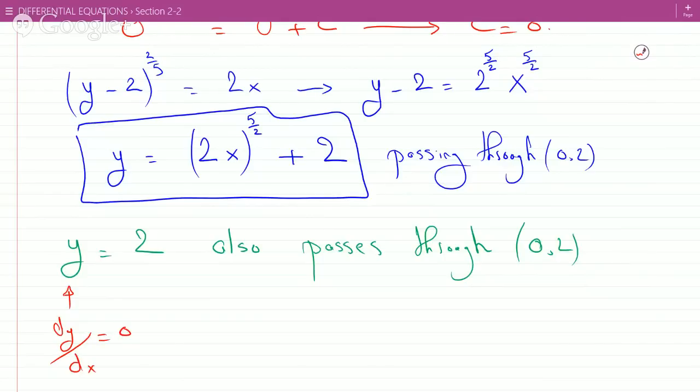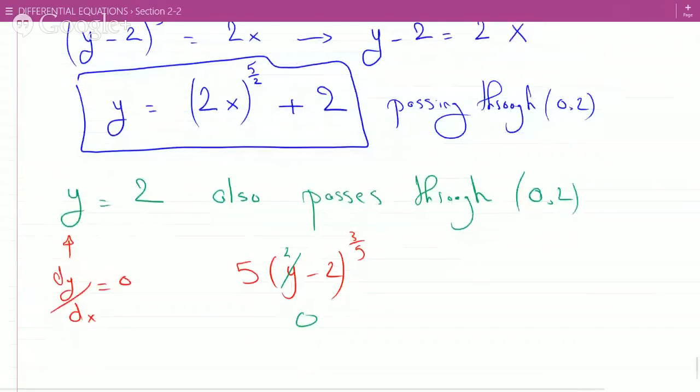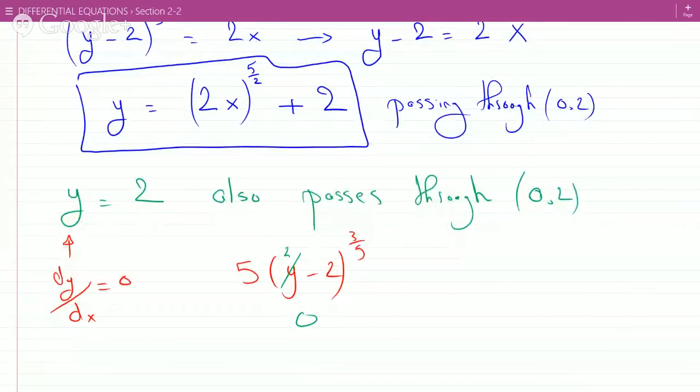And the right hand side would also be 0 when you plug in 2 here. When you put 2 here this side becomes 0, so therefore the solution is not unique.